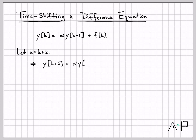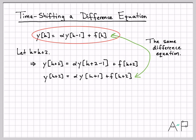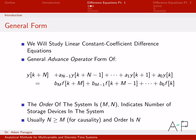If I replace k with k+2, the term y[k-1] becomes y[k+1], and I get a shifted but fundamentally equivalent equation. This shifted equation is exactly the same difference equation — nothing has changed, I've just shifted things on the time axis. Since a difference equation is true for all k, there are infinitely many equivalent forms we could write down.